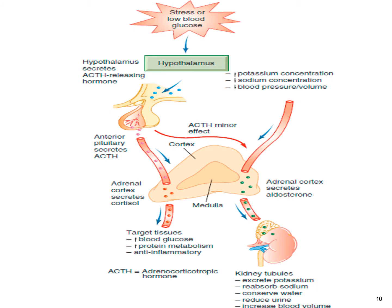Epinephrine prepares the body to meet stress or emergency situations and prevents hypoglycemia. Norepinephrine functions as a pressor that causes blood vessels to constrict to maintain blood pressure. Mineralocorticoids affect electrolytes, particularly sodium, potassium, and chloride. The primary mineralocorticoid is aldosterone, which promotes the retention of water by acting on the kidney to retain sodium in exchange for potassium. Water stays with sodium and potassium is excreted in the urine.